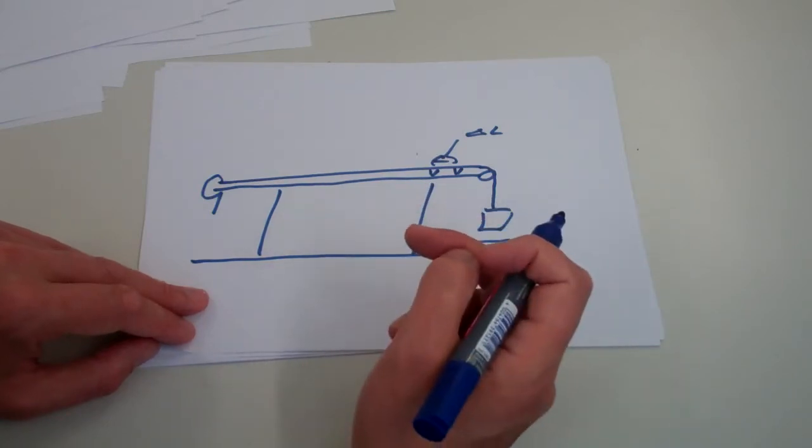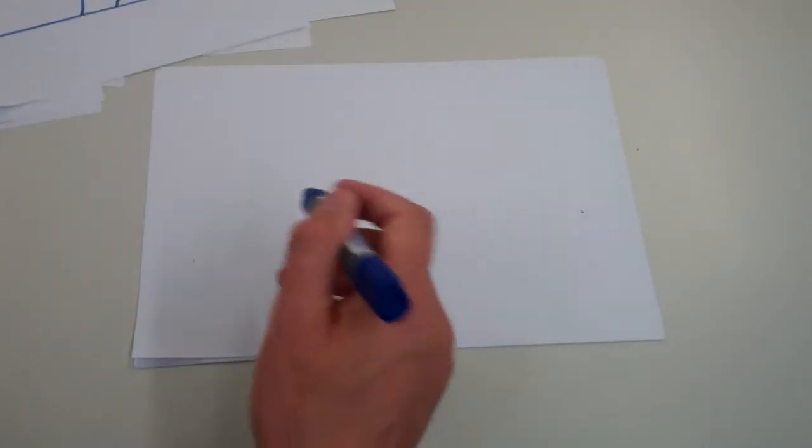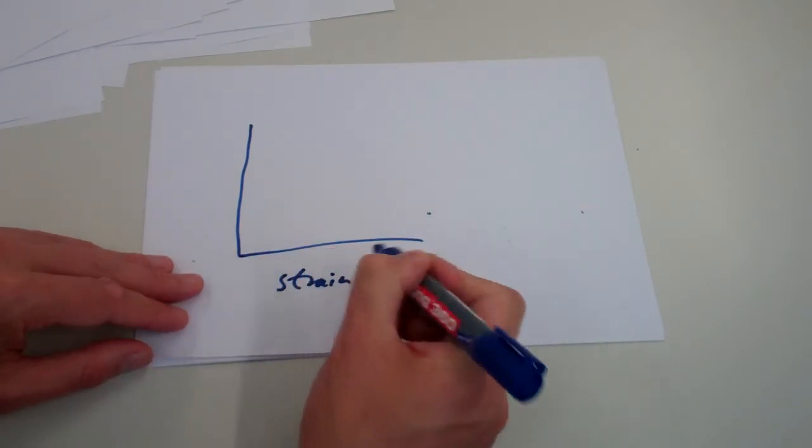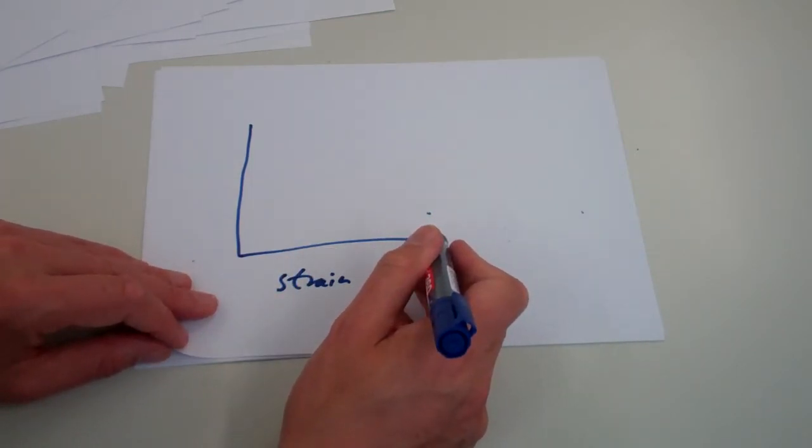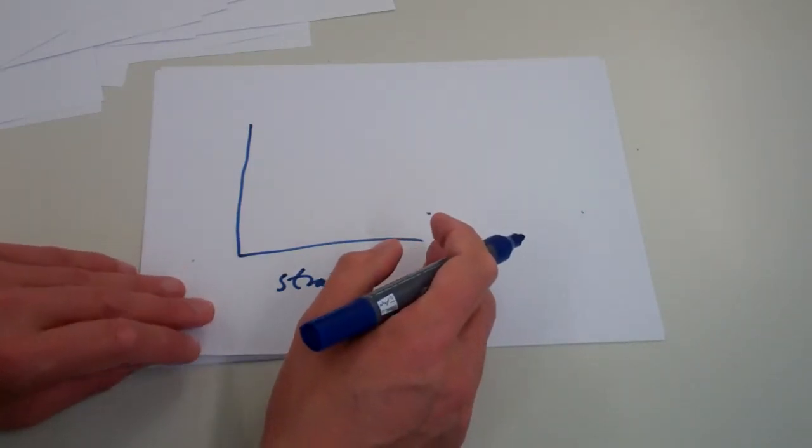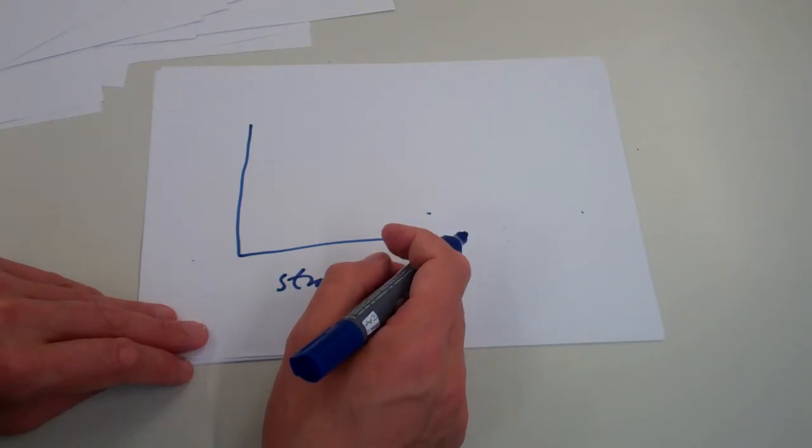So once we've got our results, we can start processing them. We will need to calculate the strain for each of our measurements. That's easy enough. That's the extension over the original length, and we don't have to worry too much about units there as long as they're both in the same units.